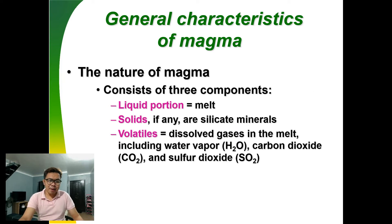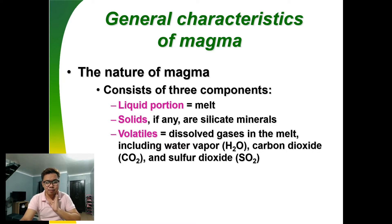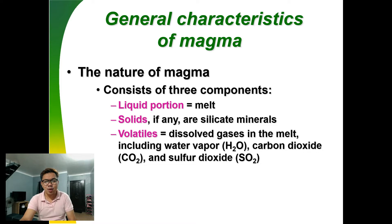The nature of magma consists of three components: the liquid portion — the part that is actually melting down; the solid part, usually made up of silicate minerals; and the volatiles or dissolved gases in the melt, including water vapor, carbon dioxide, and sulfur dioxide.